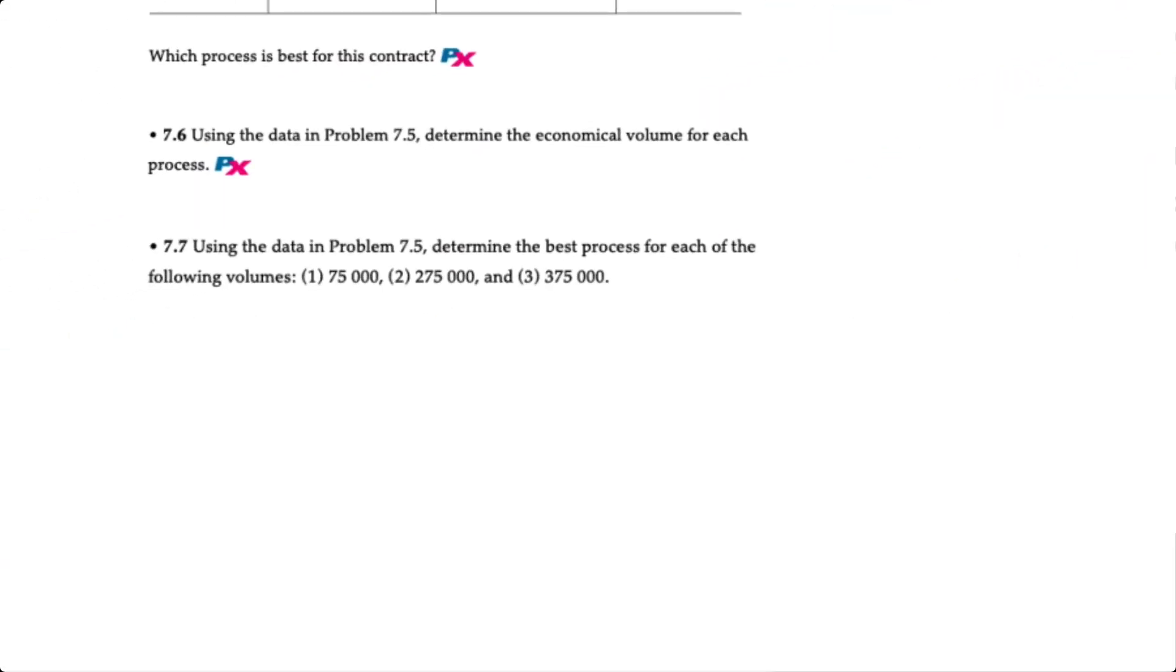Finally for problem 7.7 we're asked to determine the best process for each of the following production volumes: 75,000, 275,000 and 375,000. So at 75,000 we know we're going to use GPE because the optimal range is anything less than 100,000. If the company expects 275,000 units to be produced or sold then the flexible manufacturing system is optimal because 275,000 falls between 100,000 and 300,000 units. And finally if 375,000 units are expected then the company should use a dedicated machine because 375,000 exceeds the 300,000 minimum viable threshold for that alternative.